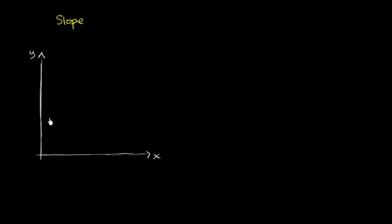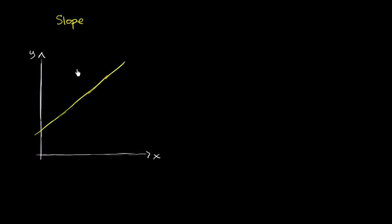You could also view slope as a measure of the inclination of a line. The more inclined the line is, the more positive a slope it would have. This right over here has a positive slope — it's increasing as x increases. And if this had an even higher inclination, if it increased even more as x increases, then it would have an even higher slope.